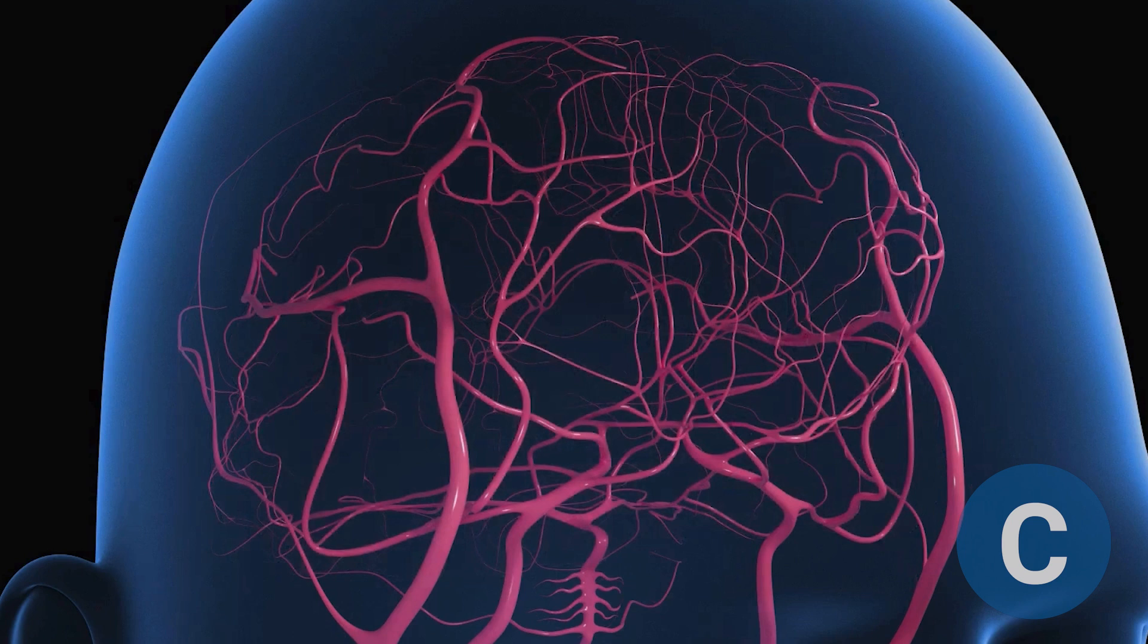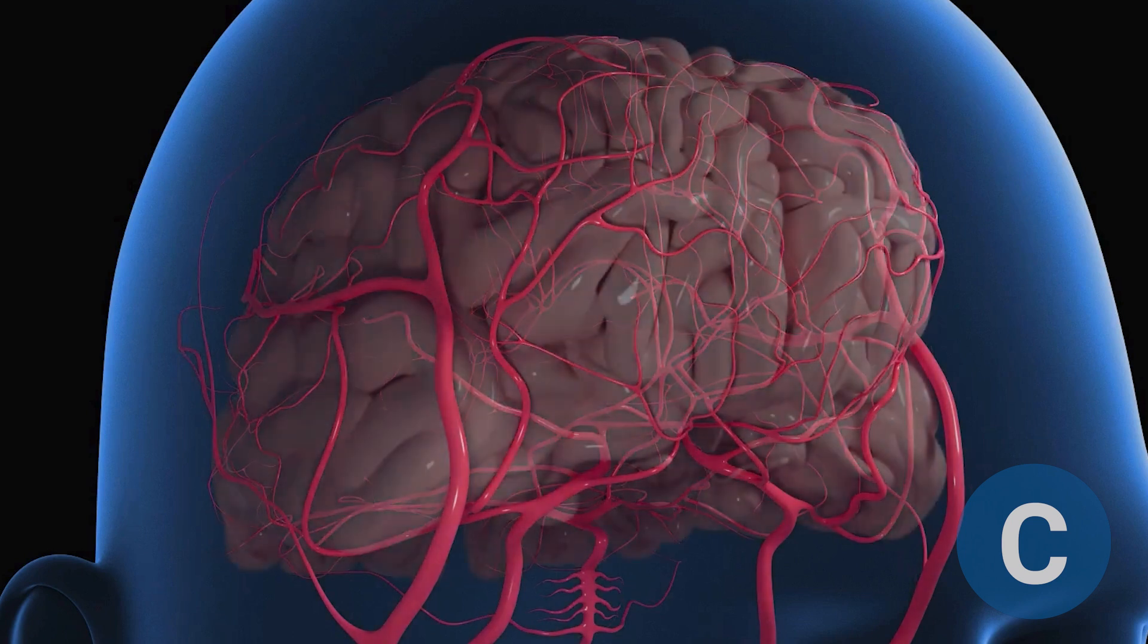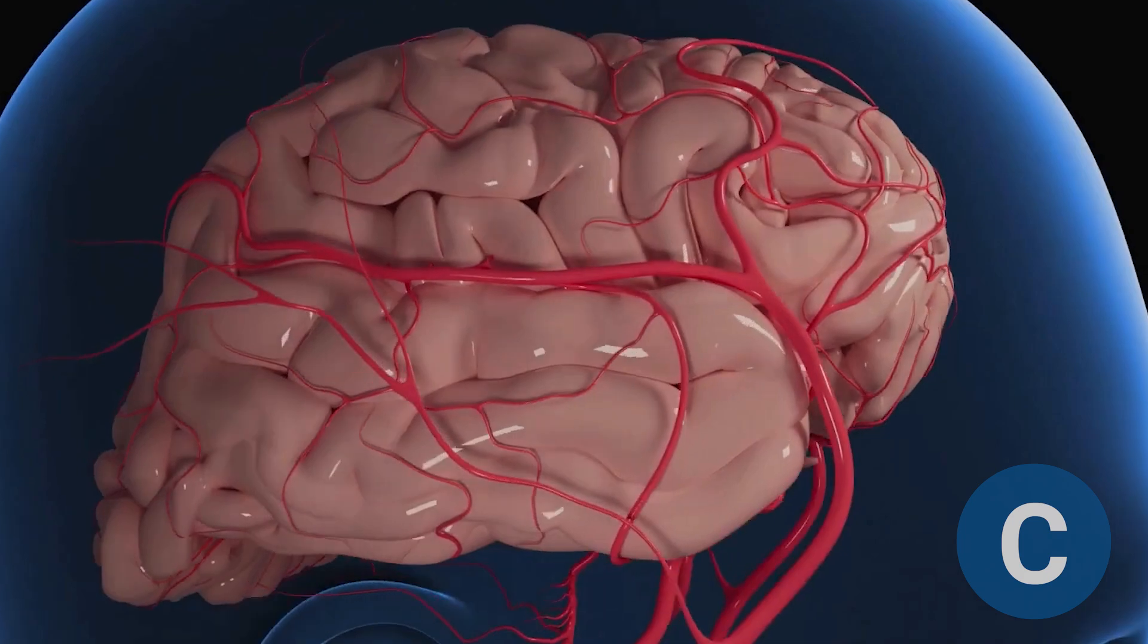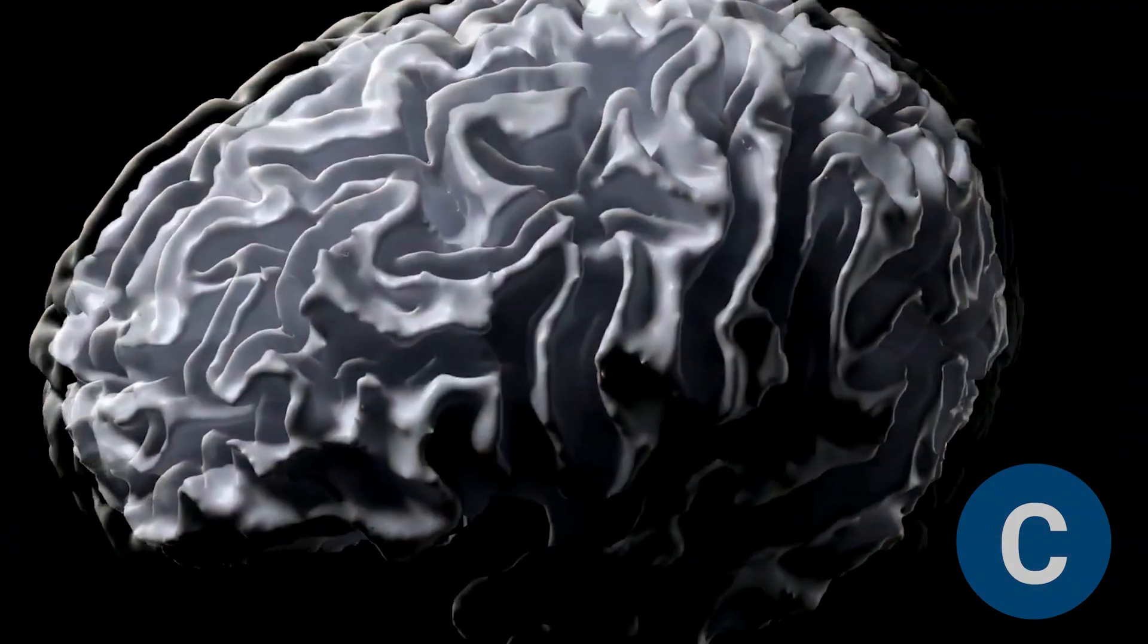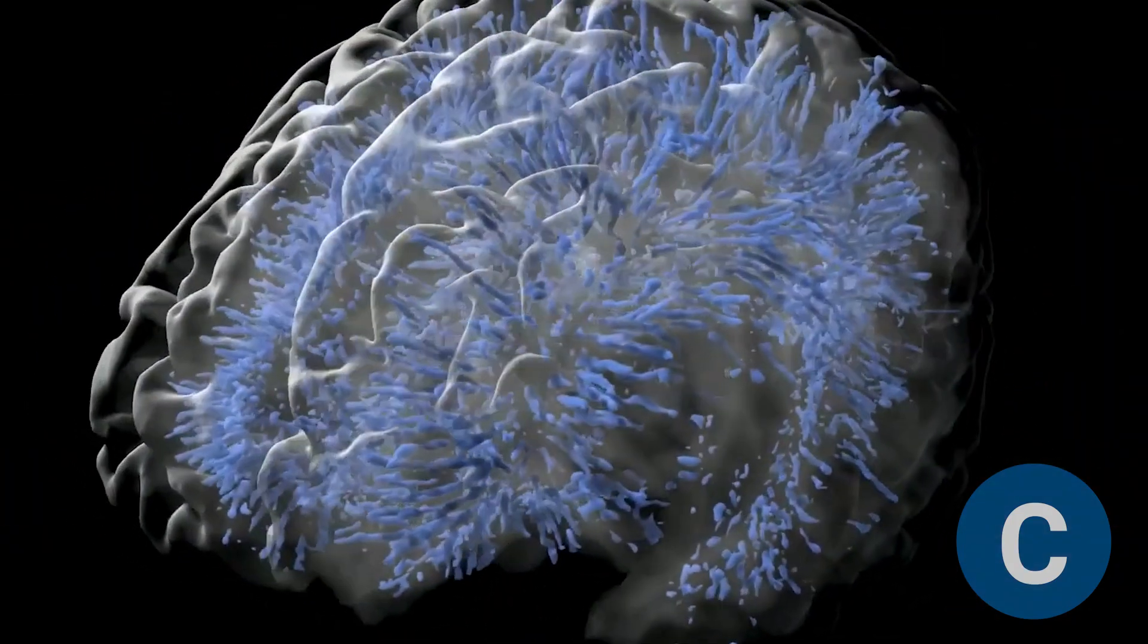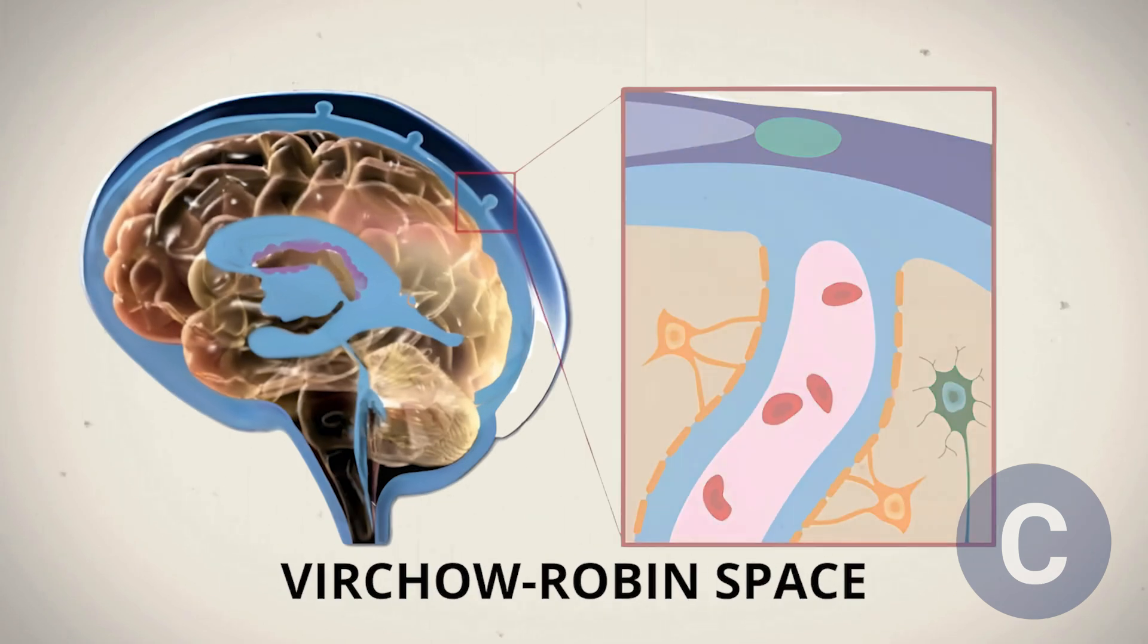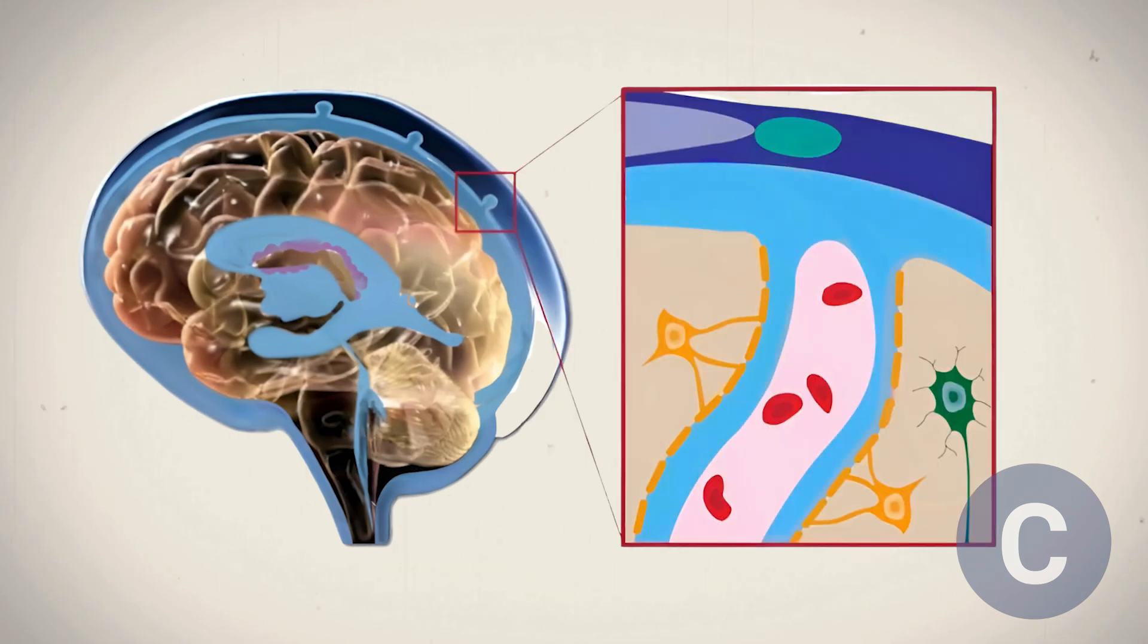Once inside the parenchyma, these arteries branch into smaller arterioles, which further branch to reach different brain areas. Surrounding these arteries and arterioles is a space known as the paravascular space, or Virchow-Robin space, which might act as a pathway for cerebrospinal fluid.